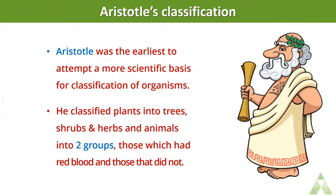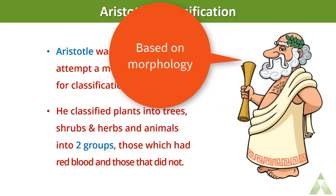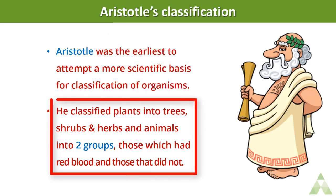His classification strategy was based upon the morphological characters of plants and animals. He classified plants into trees, shrubs, and herbs, and animals into two groups: those which had red blood cells and those who didn't have red blood cells.